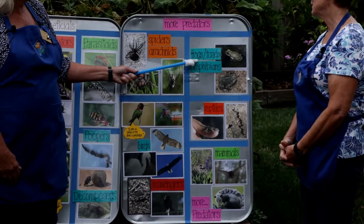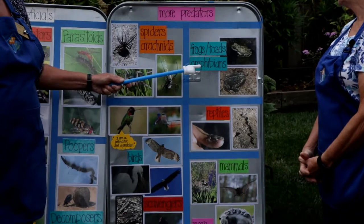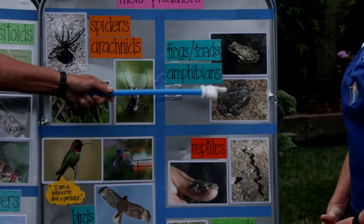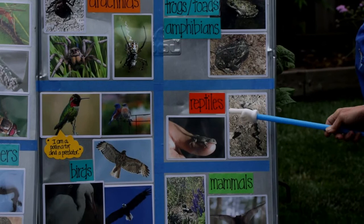The next category is frogs and toads — the fancy word is amphibians. Frogs and toads especially love slugs and snails, which are real garden pests for everybody. Along with that, they eat many harmful insects.